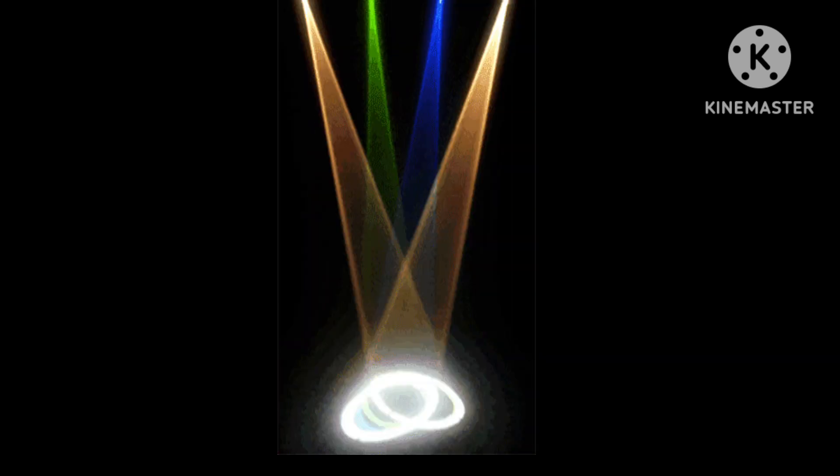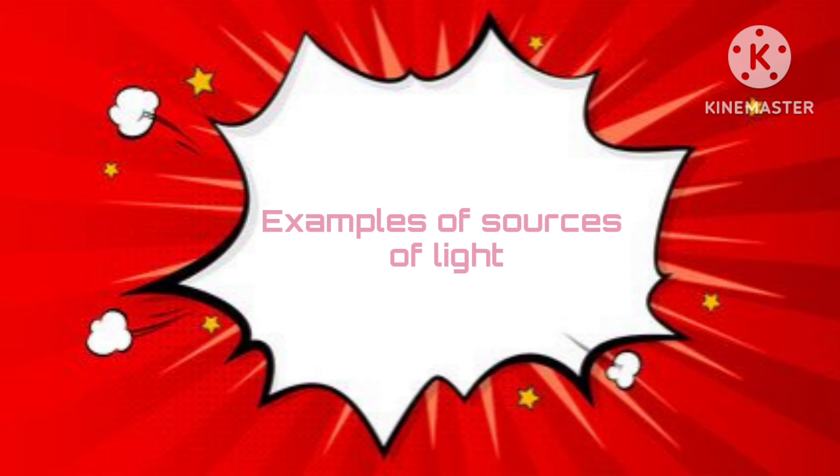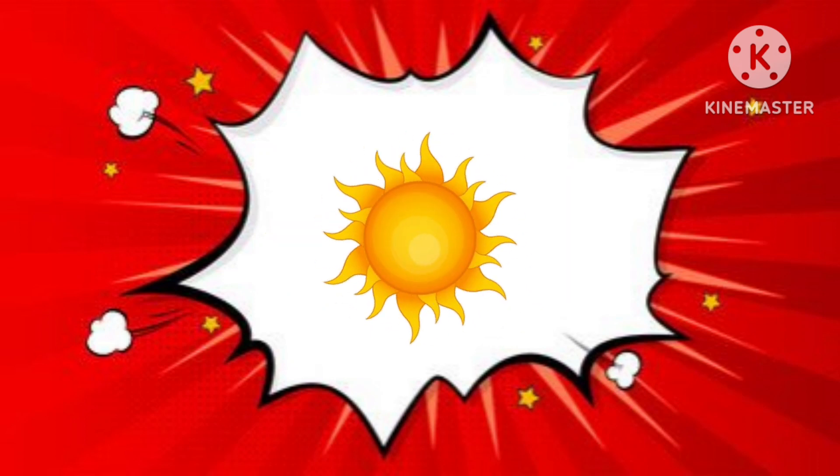Light is a form of energy. We cannot see objects in darkness, but as we switch on the lights it makes the objects visible. Some common examples of sources of light are sun, bulb etc. Sun is a natural source of light, whereas bulb is a man-made source of light.